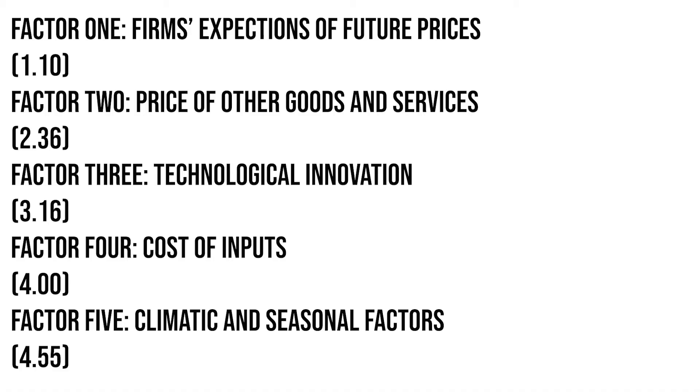The five factors we're going to look at are: expectations of future prices, the prices of other goods and services, technological innovations, changes in the cost of production inputs also known as the factors of production or resources, and climatic and seasonal influences. These are not the only factors that will affect supply — these are some of the more important factors, and if you're across these you can usually get through most examples and provide a detailed level of explanation in your essays and exam responses. So these are five good ones to have under your belt.